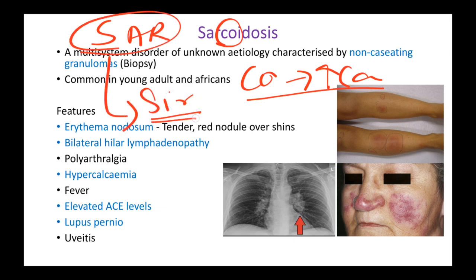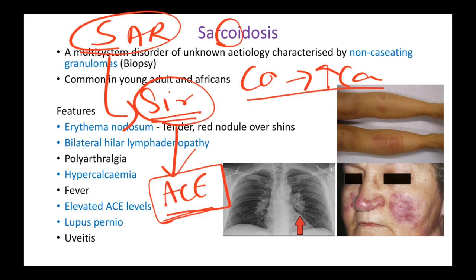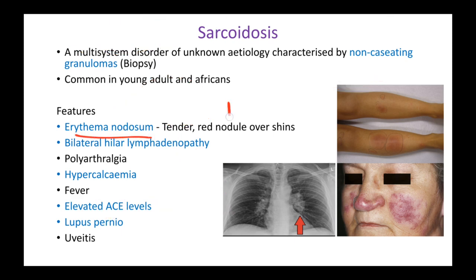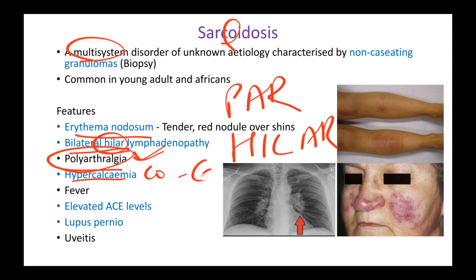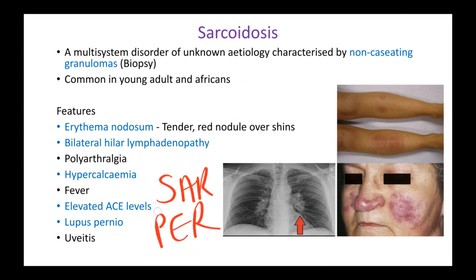For the ACE part of the mnemonic, think of SAR as 'SIR' - like calling someone sir because they have seniority or experience. That gives us elevated ACE levels. So to summarize: erythema nodosum for 'pair', bilateral hilar lymphadenopathy for 'hilar', polyarthralgia - because this is a multi-system disorder, joints are prone to be affected - hypercalcemia for 'CO' (CA), fever as a vague systemic symptom, and elevated ACE levels.